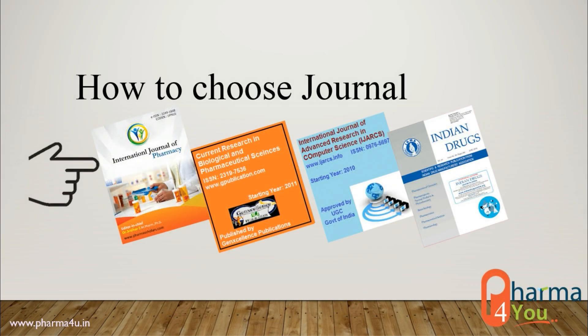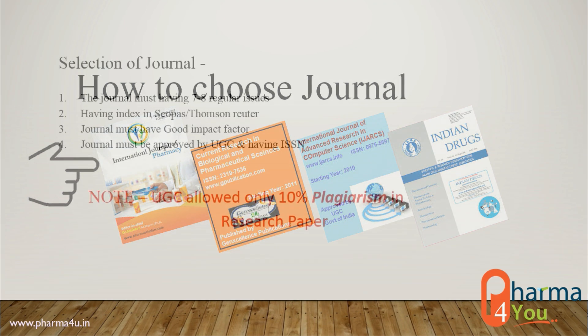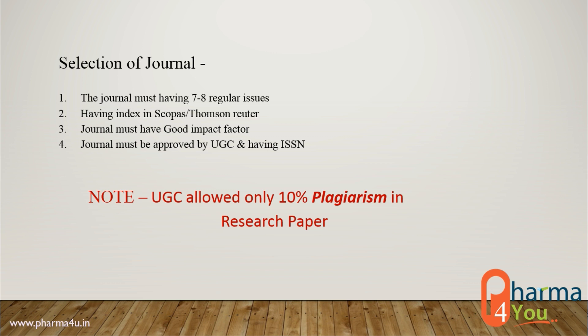How to choose a journal for your publication. Selection of journal is the main criteria. If you publish your research article in a popular or good journal, then your article becomes more popular and more used as a reference in other articles. To select the journal, here are some key points: Number one, the journal must have seven to eight regular issues. Number two, the journal must have an index in Scopus or Thomson Reuters. Number three, the journal must have a good impact factor.